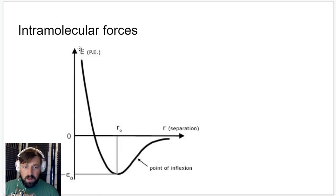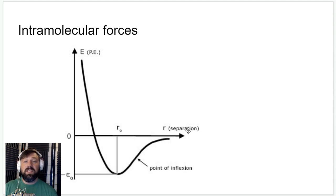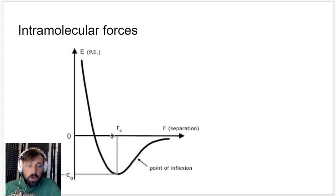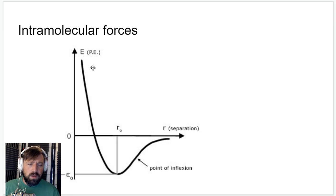This is a diagram you should be familiar with — an intramolecular energy diagram. On the y-axis we have potential energy, and on the x-axis we have the distance between the two atoms. If they're really close together, the potential energy is very, very high, which means they're going to start to push each other apart. It's not a very stable situation.